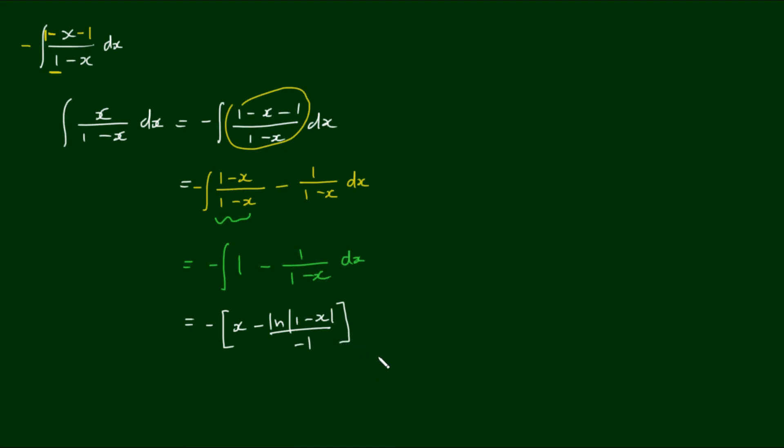If we close that expression off and we add an integration constant c on the end. Now if we expand the negative into the brackets we have minus x minus log of 1 minus x plus c. And there is our result.